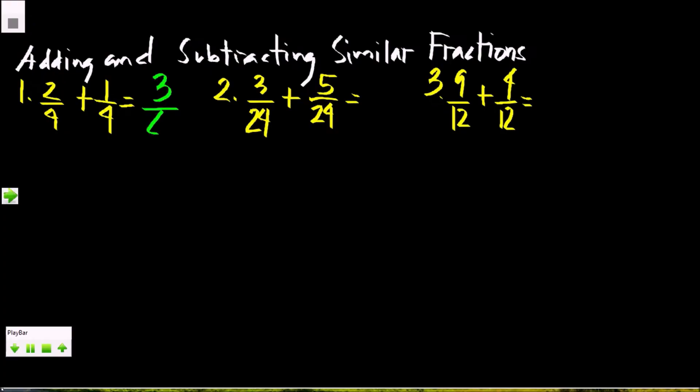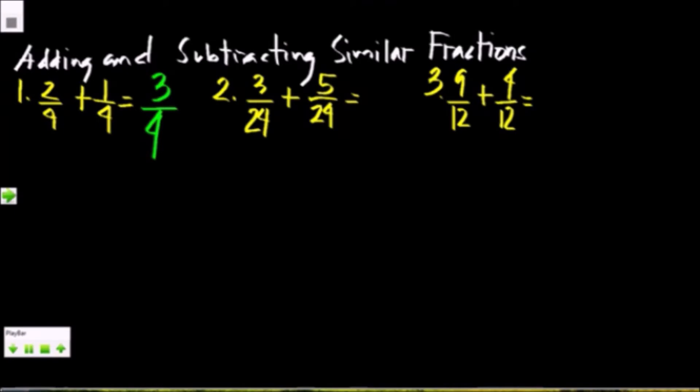Here 2 plus 1 is equal to 3, then copy the denominator 4. The answer 3/4 is in the lowest term, so we need not to simplify them. Again, lowest term is if the numerator and denominator are relatively prime and that they have no common factors other than 1.